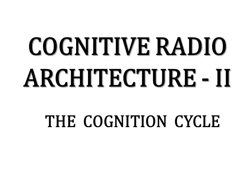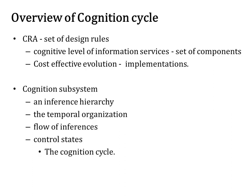Hi everyone, today we will look into the second perspective of cognitive radio architecture, which is the cognition cycle. Cognitive radio architecture comprises a set of design rules by which the cognitive level of information services may be achieved by a specified set of components, in a way that supports the cost-effective evolution of increasingly capable implementations over time. The cognition subsystem of the architecture includes an inference hierarchy and the temporal organization and flow of inferences and control states, which is the cognition cycle.